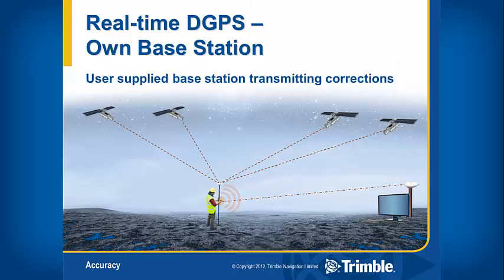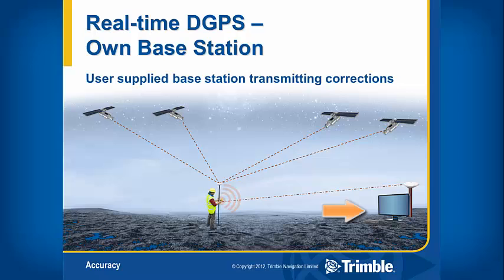Here is a visual representation of what using your own base station would look like for receiving real-time corrections from a single base. We'd have our field worker collecting satellites, and then receiving corrections from a base station, either via radio signal or internet via MiFi, integrated cell modem, or tethered cell phone.